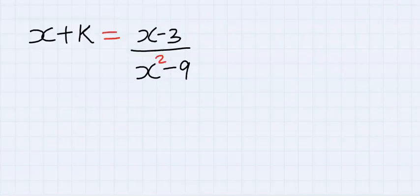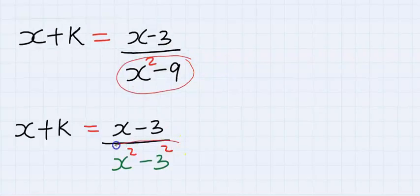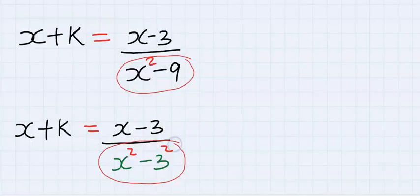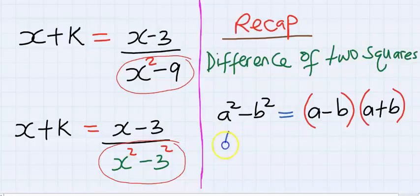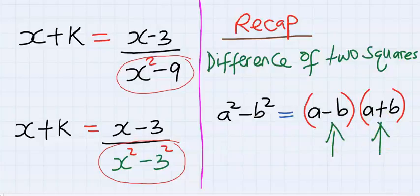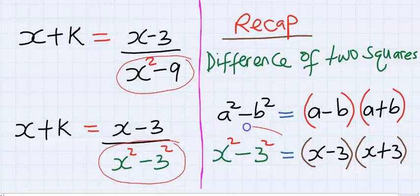Next, we can observe that this denominator can be reduced to difference of two squares. This denominator can equally be represented like this—both are the same. Recap: difference of two squares, a squared minus b squared equals a minus b in brackets, a plus b in brackets.